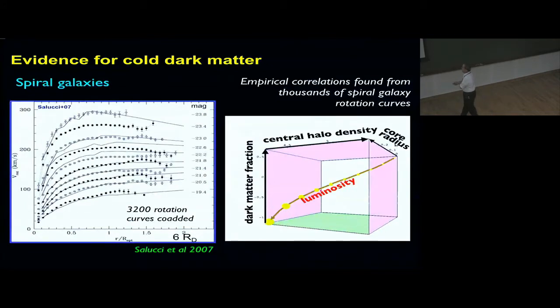If one plots in three dimensions the dark matter fraction in mass in the galaxy versus the central density in dark matter versus the radius of the galaxy, all spiral galaxies fall onto one curve. This is an astonishing correlation that is not completely understood to this day in astrophysics.